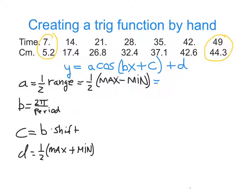And go on from there. So for our range, our range would be 44.3 take away 5.2, which would be 39.1. And then we're going to divide that by 2 to find the amplitude.